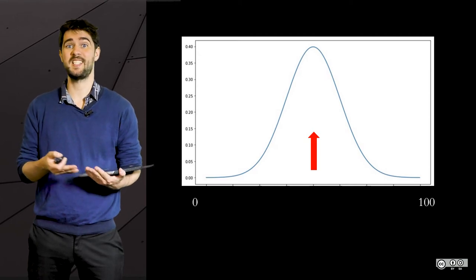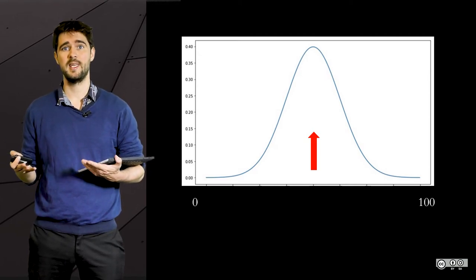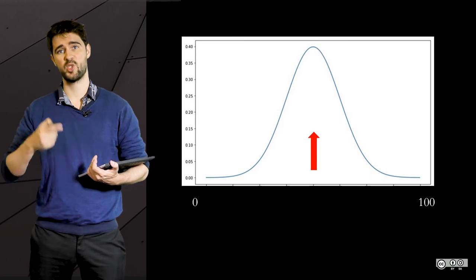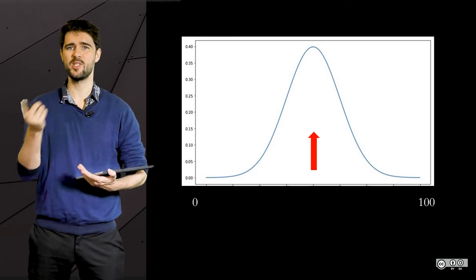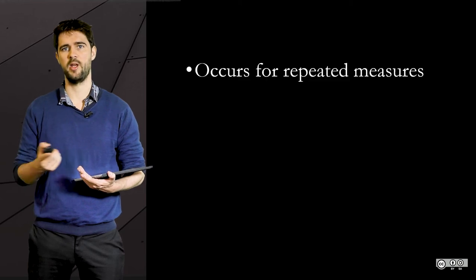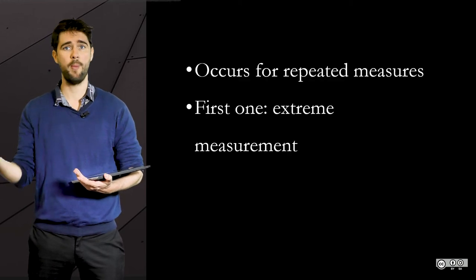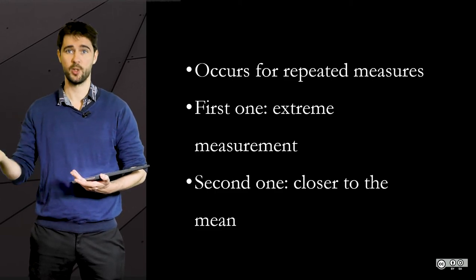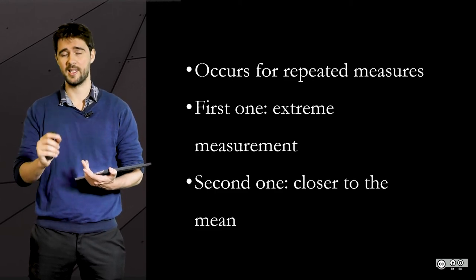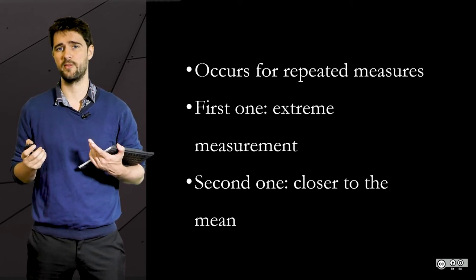This is how probabilities work—it's unlikely to have two extreme measurements in a row. So if you had an extreme measurement at a given time, whether good or bad, it's more likely that the next measurement will be closer to the mean, regardless of what policies you enforce.